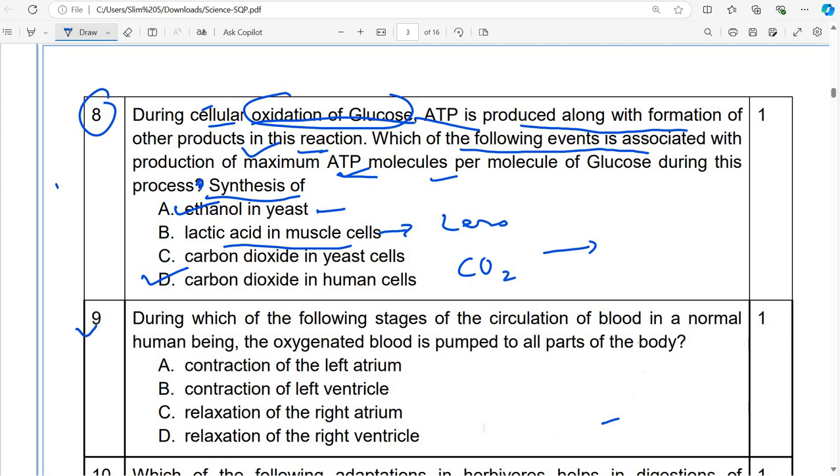Question number 9. During which of the following stages of the circulation of blood in a normal human being, the oxygenated blood is pumped to all the parts of the body? So, normal human being, the oxygenated blood is pumped to all the parts of the body. The oxygenated blood is transferred to all the parts of the body.